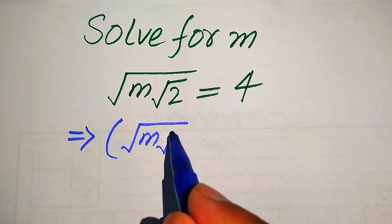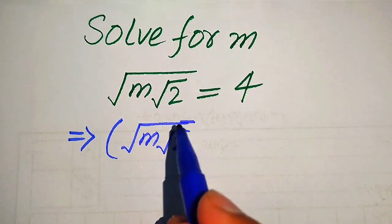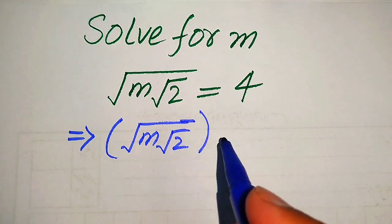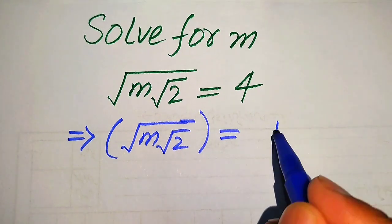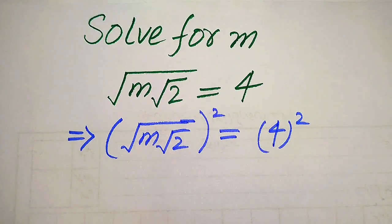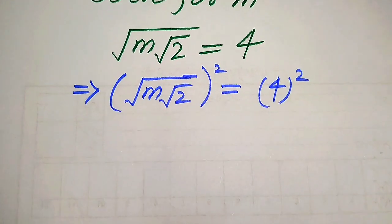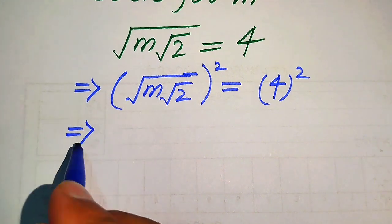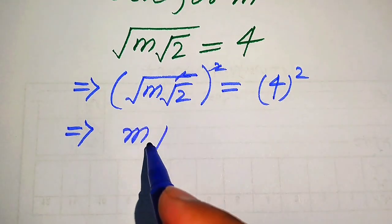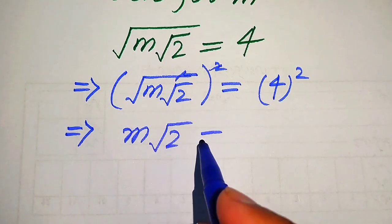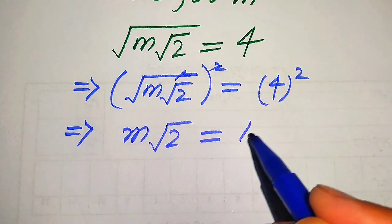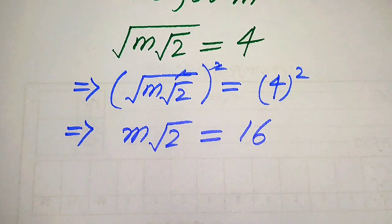After taking squaring, it will be written as square root of m times square root of 2, equals to 4, whole squared. We apply the square sign on both sides, and in the next step this 2 and the square root are gone, and we get m times square root of 2 equals 4 squared, which is 16.